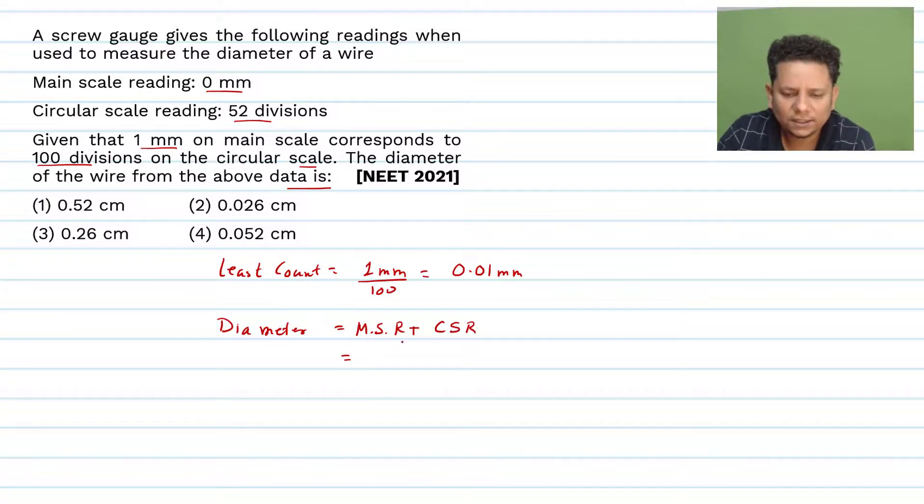So main scale reading is 0 plus circular scale reading is 52 multiplied by least count, that is 52 multiplied by 0.01 mm. So your diameter is 0.52 mm.